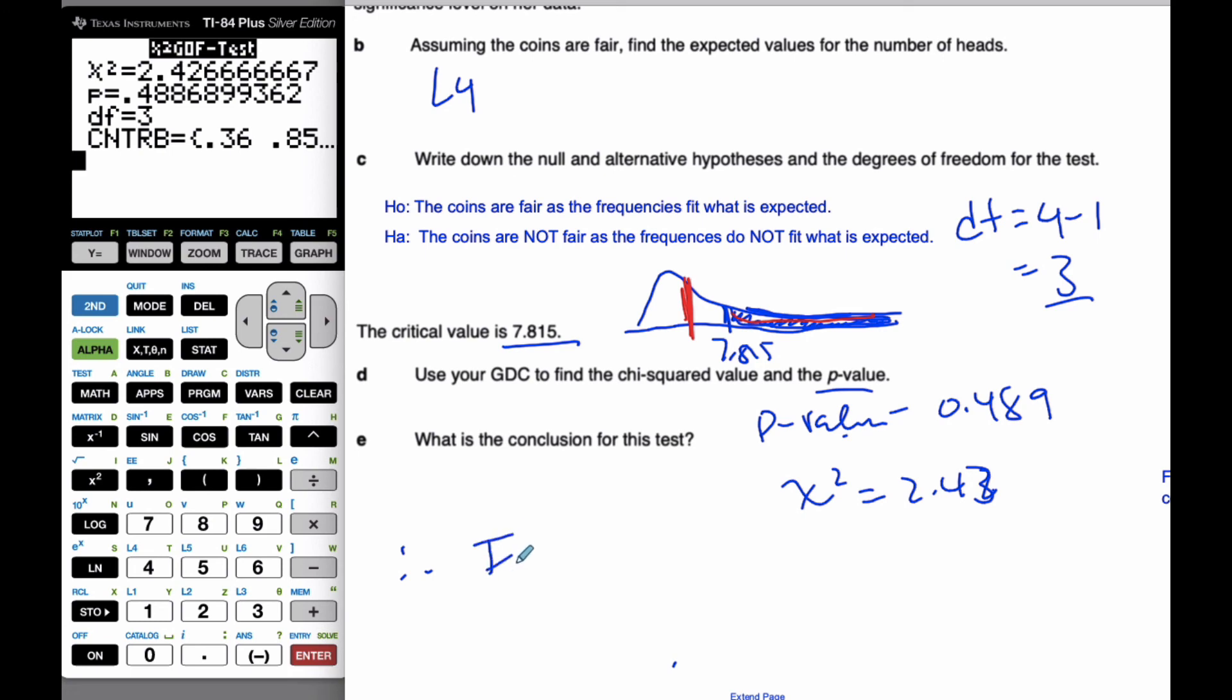I am going to fail to reject the null hypothesis. Because chi-squared is less than the chi-squared critical value of 7.815, or I could also say because the p-value is bigger than alpha.